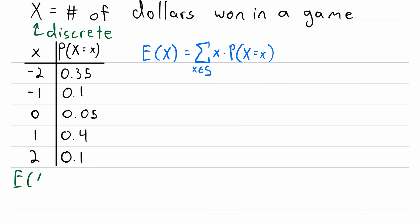So the expected value of the random variable x is equal to negative 2, that's the first outcome here in the column, multiplied by its probability, which is 0.35. Add to that the next possible outcome, which is negative 1, multiplied by its probability, which is 0.1,